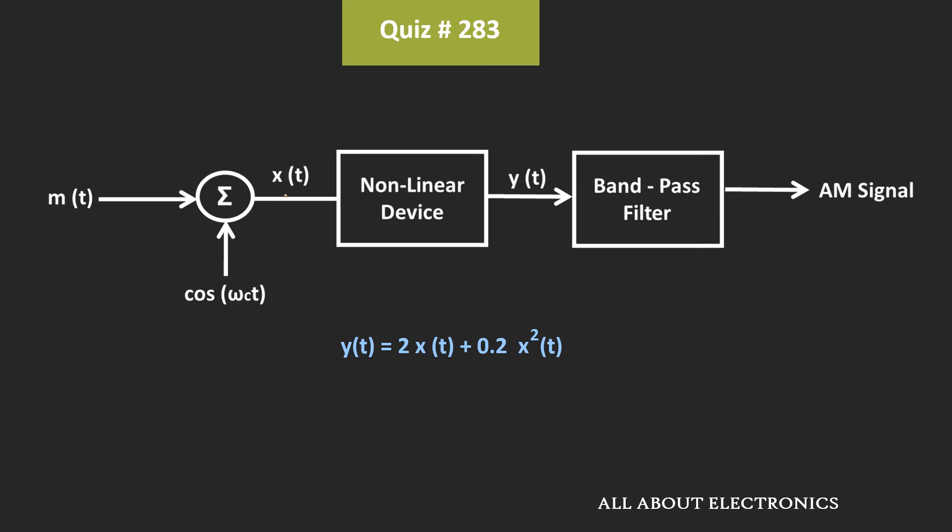Now here, this x(t) is the summation of the modulating signal as well as the carrier signal. That means here, this x(t) is equal to m(t) plus cos(ωct). And here, we have been given that this message signal or the modulating signal is a sinusoidal signal with a peak value of 2V. That means here, this m(t) is of the form 2 times sin(ωmt).